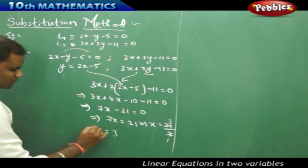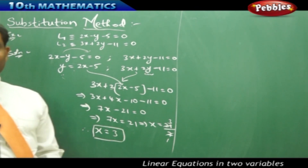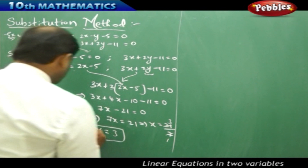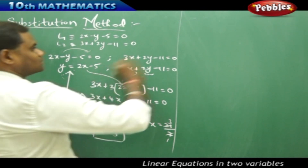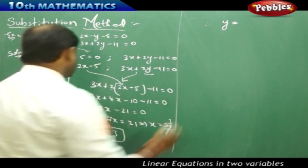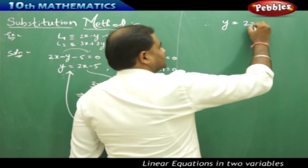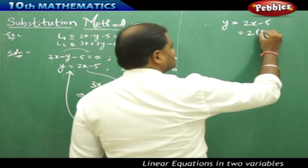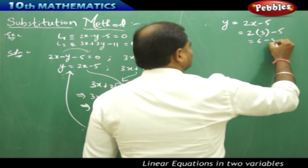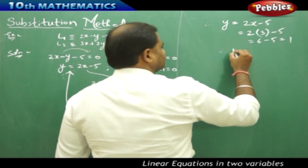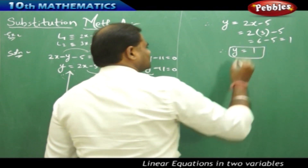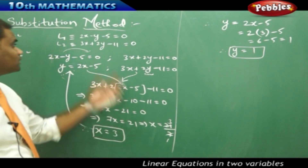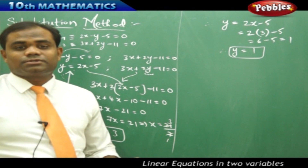This gives x equals 3. Now substituting x equals 3 back into y equals 2x minus 5, I get y equals 2 times 3 minus 5, which is 6 minus 5, giving y equals 1. Therefore, x equals 3 and y equals 1 are the solutions of the given lines L1 and L2 using the substitution method.